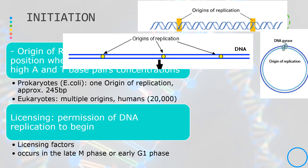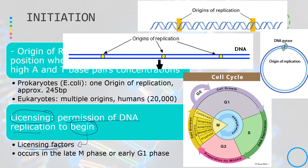The second concept under initiation is licensing, which refers to the permission for DNA replication to begin. This is carried out by different licensing factors and usually occurs in the late M phase of mitosis or the early G1 phase, right before DNA replication in the S phase begins.